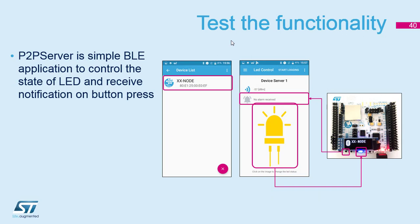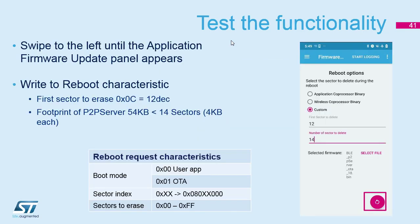You should be able to control the state of the LED by pressing the button on the display. When you press the first button, you get a notification back to your phone and this icon will light up. The point-to-point server also integrates the OTA reboot characteristic in its service.